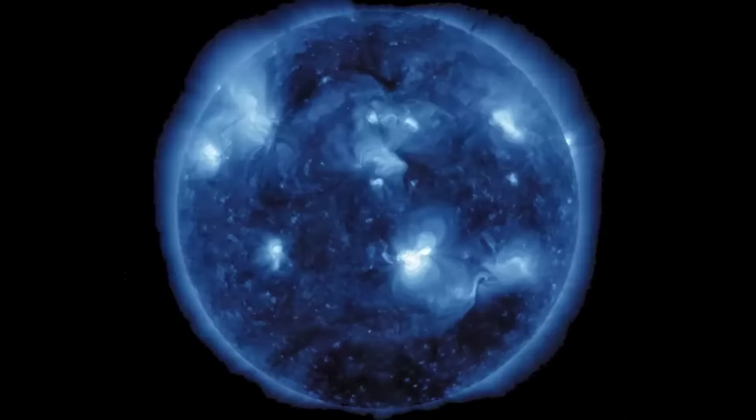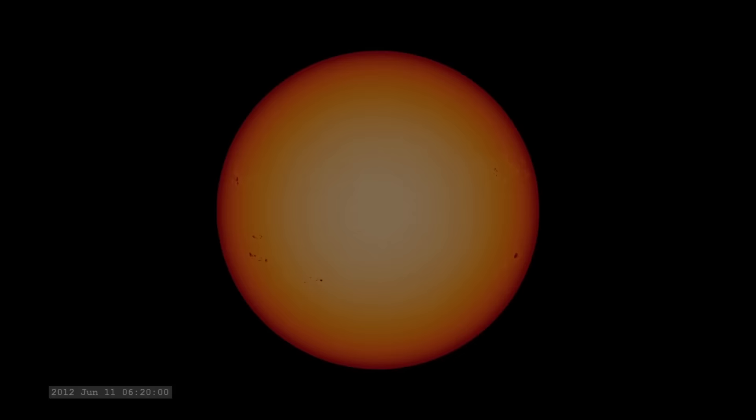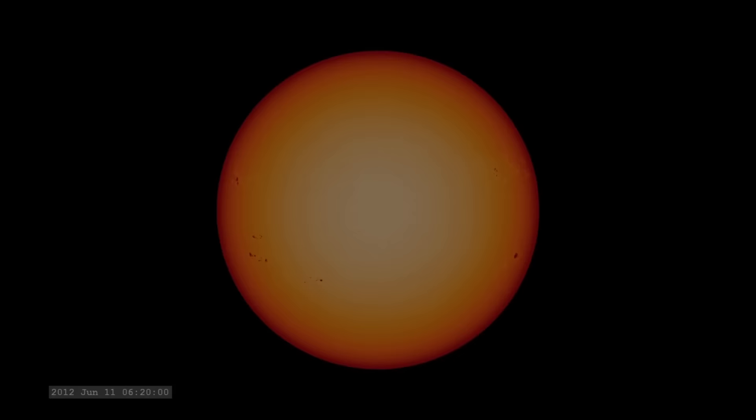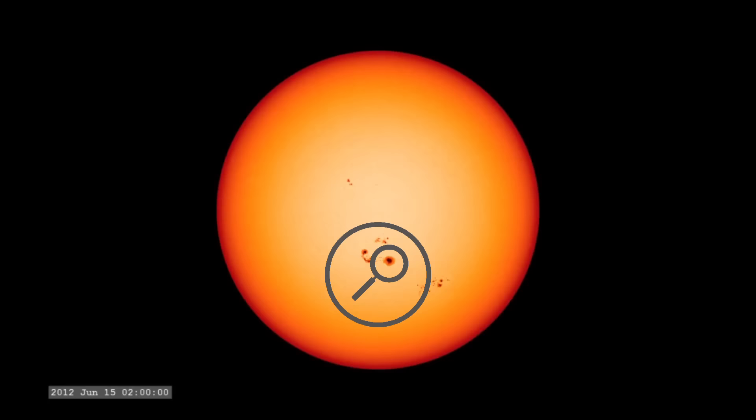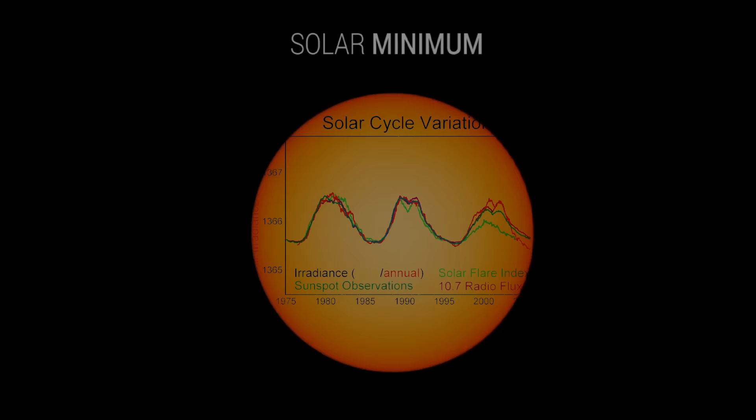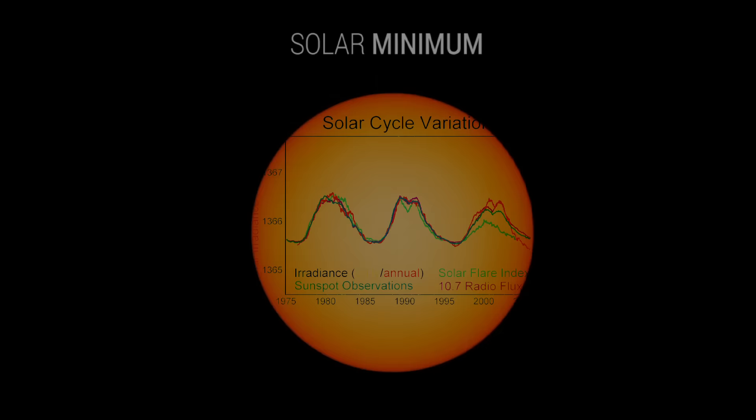This solar cycle affects activity on the surface of the sun, such as sunspots which are caused by the sun's magnetic fields. One way to track the solar cycle is by counting the number of sunspots. The beginning of a solar cycle is a solar minimum, or when the sun has the least sunspots.